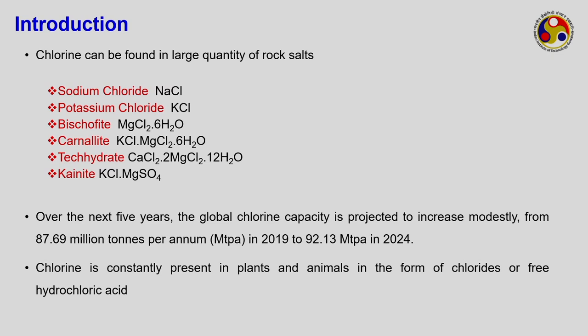Chlorine is found in large quantities especially in rock salts — sodium chloride (table salt), potassium chloride, and magnesium chloride. These are given specific mineral names: bischofite is MgCl₂·6H₂O; carnallite is KCl·MgCl₂·6H₂O; tachyhydrite is CaCl₂·MgCl₂·12H₂O; and kainite is KCl with magnesium sulphate. Any of these can be used for chlorine recovery, but the first two are most important for the electrolysis process.